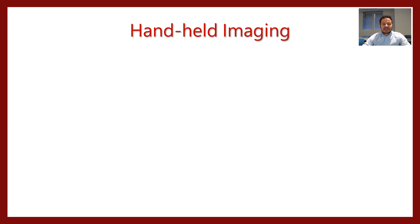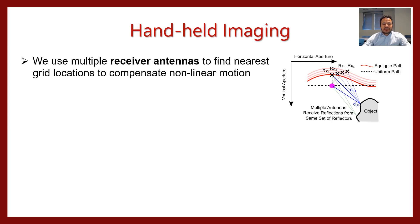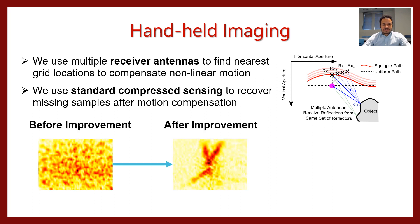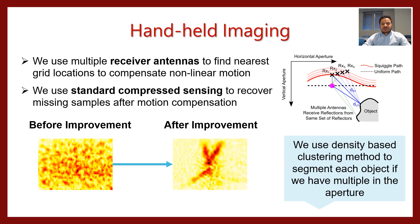To solve the handheld imaging challenge, we use multiple receiver antennas to find the nearest grid locations to compensate for non-linear motion. We use a standard compressed sensing technique to recover the missing samples after motion compensation is applied. As you can see in the figure, before improvement we cannot even recognize what kind of object it is, while after the improvement we can guess it's a scissors. We use a density-based clustering method to segment each object when we have multiple objects in the aperture.